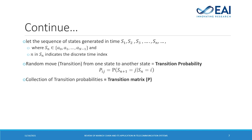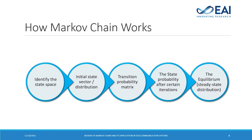The collection of these probabilities will form a transition matrix. How Markov chain works: first, we need to identify the state space, then we need to know the initial state vector. After we know the two, we determine the transition probability matrix. Using the matrix, the state probability will be identified in different iterations. After a certain number of iterations, the matrix will reach its steady state or equilibrium. We'll see a worked example in the next slides.